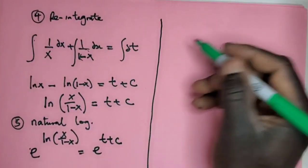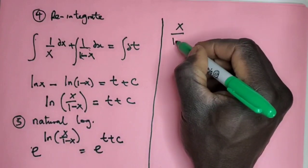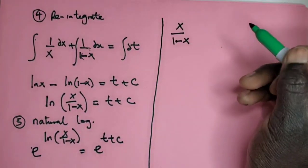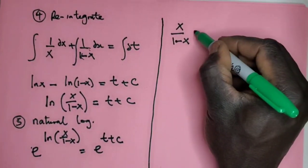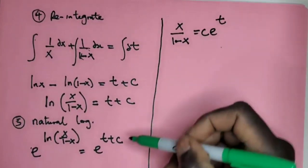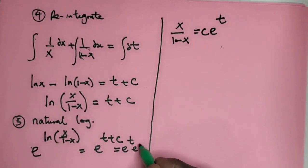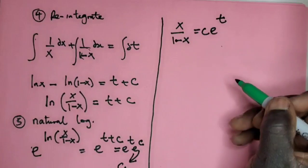So this e to the ln of something is just that number, so it's going to be x/(1-x) = e^t times e^C. But e^C here is just constant, so you can reduce it to C.